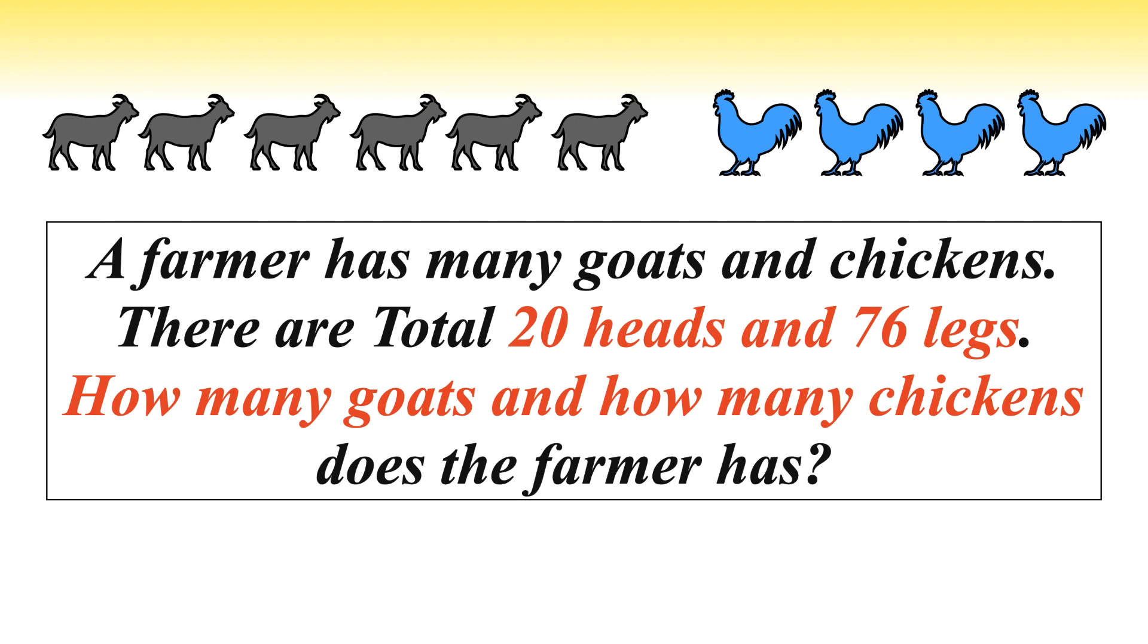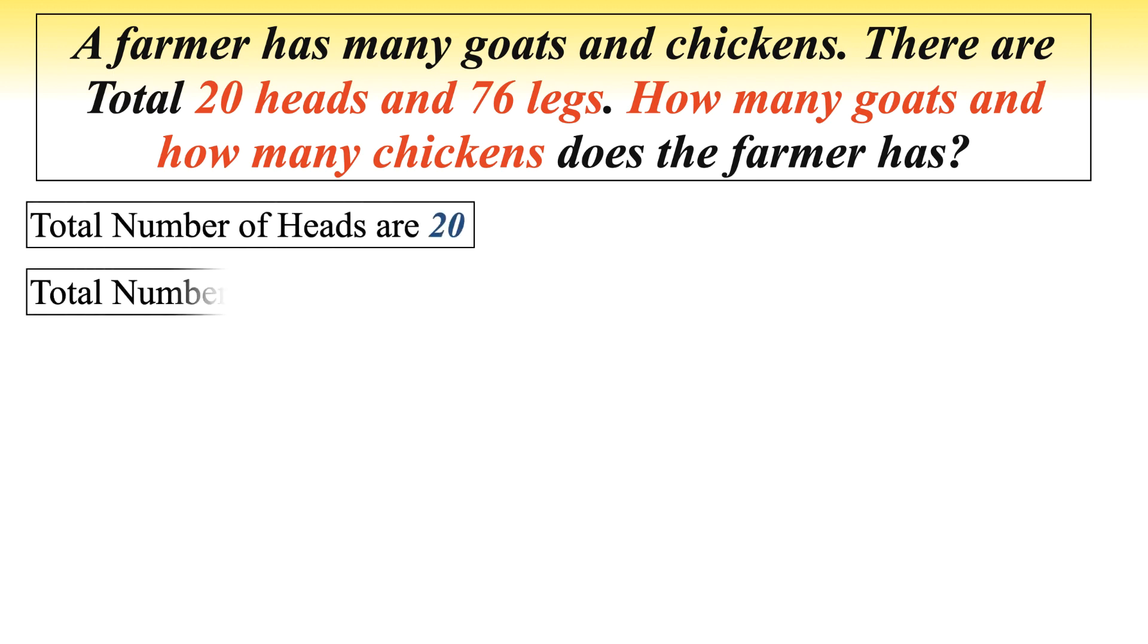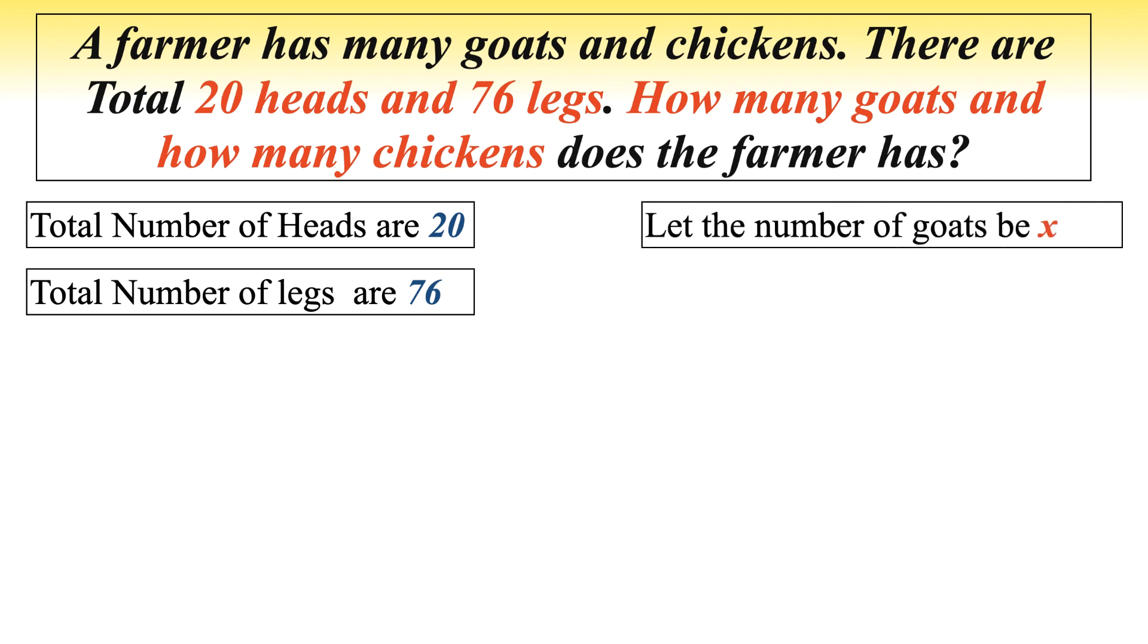This is a math puzzle. The correct method to solve this kind of puzzle is through creating equations. As per the puzzle, we know total number of heads are 20, total number of legs are 76. Let the number of goats be x and let the number of chickens be y.